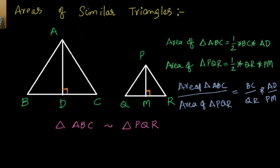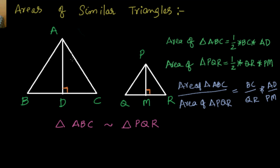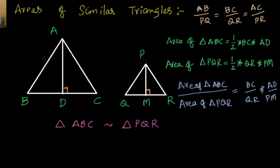Now, if I am able to find out the relation between BC by QR and AD by PM, then I should be able to find out the answer. Because we know that when two triangles are similar, we know that the sides are in proportion — that means AB divided by PQ is equal to BC divided by QR is equal to AC divided by PR. This is what we know when two triangles are similar.